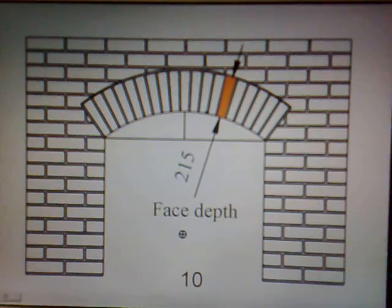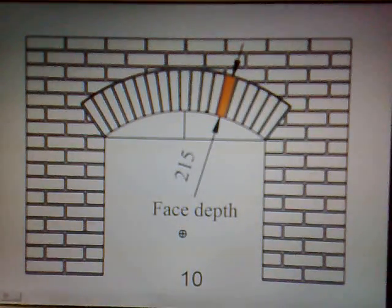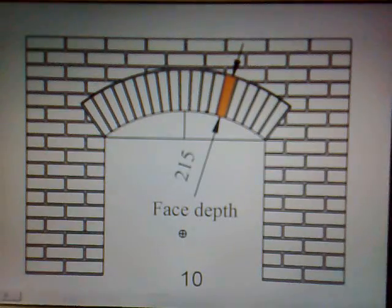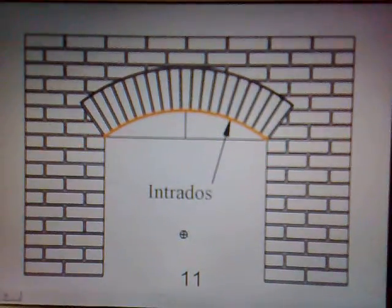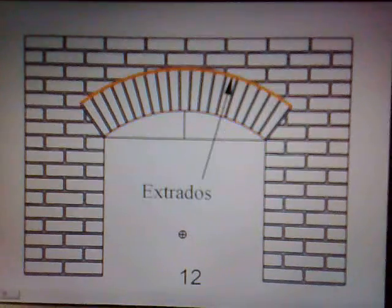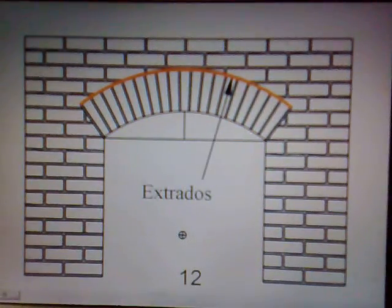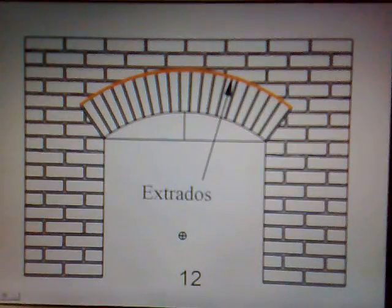Nine: the rise — this is the vertical distance between the springing line and the soffit of the arch. Ten: the face depth — this is the dimension between the extradose and the intradose. Eleven: the intradose — this is the inner or bottom curve of the arch.